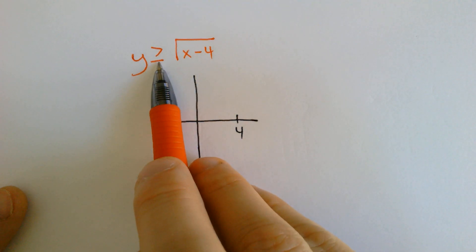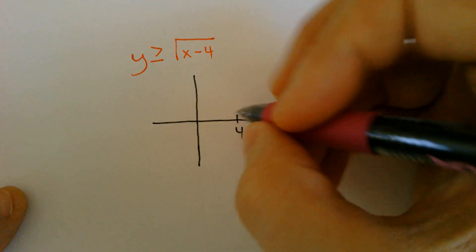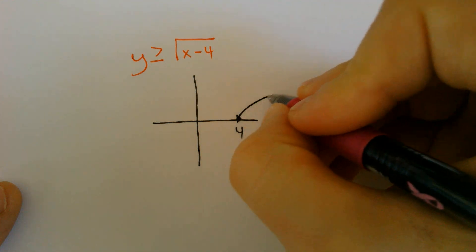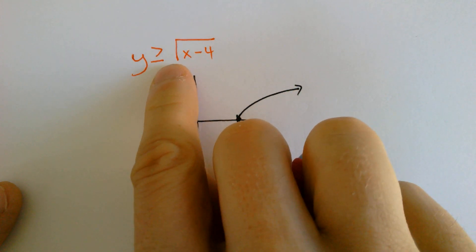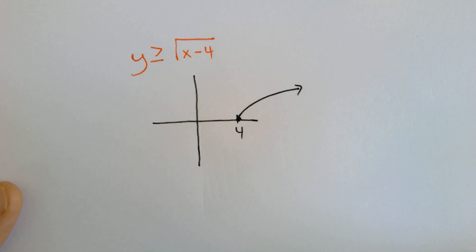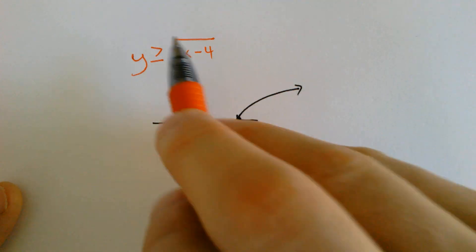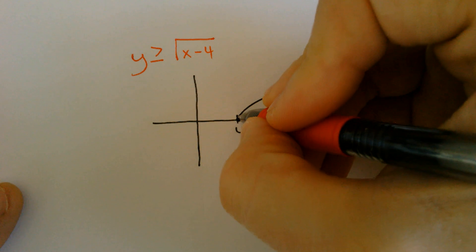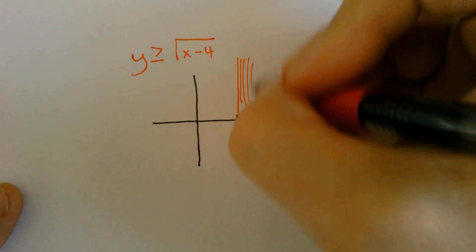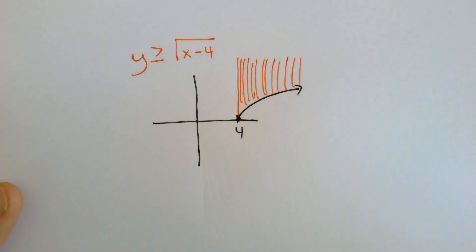Because there's an equal to symbol, we are going to have a solid line. Because it's positive in front, it curves up. Here, it says greater than or equal to. So here, we are going to be shading up because greater things are above.